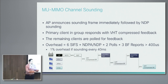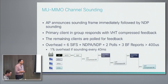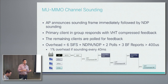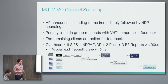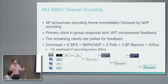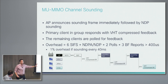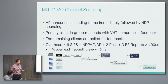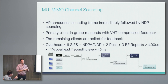One client can send the feedback back immediately, but the others need to be polled via a sounding poll. Each client sends back VHT compressed beamforming information, which is all the AP's chipset needs to do the math and transmit the MU frame. But there's significant overhead — this entire exchange for three clients is on the order of 400 microseconds, which is a lot. You don't want to sound the channel to any given three clients more frequently than around every 40 milliseconds; otherwise there are very diminishing returns versus just sending SU to them individually.